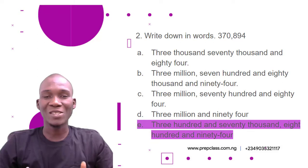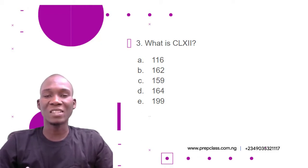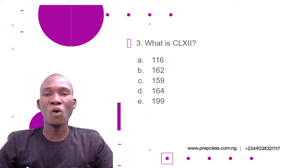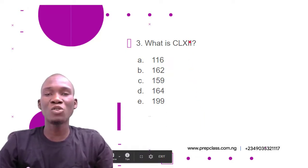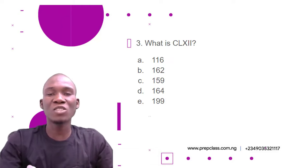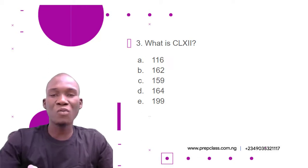Let's move to the next question. Question number three: what is CLXII? The options are: A) 116; B) 162; C) 159; D) 164; E) 199. CLXII represents Roman numerals, so we have to convert the Roman numerals into a figure.